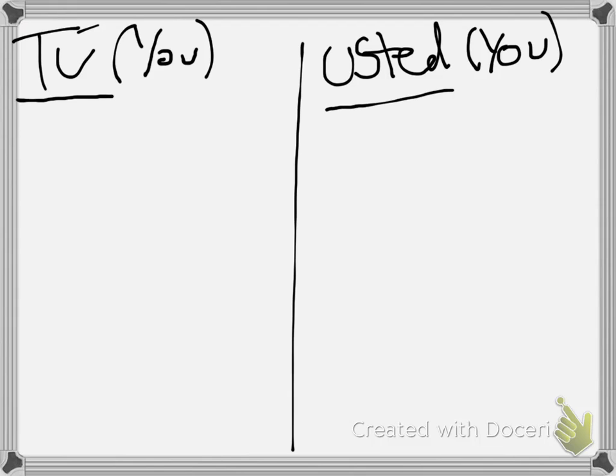Now, the abbreviation for usted is just u, d, okay, ud. So if you see u, d, don't say oud, just know it's usted, it's the abbreviation, because it's a common word, so we use it all the time.